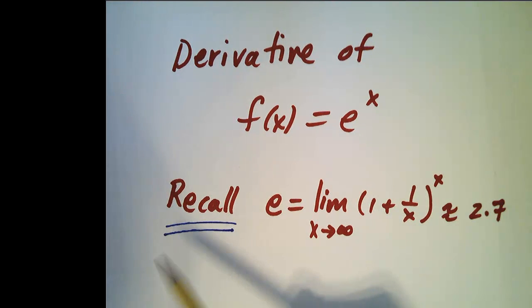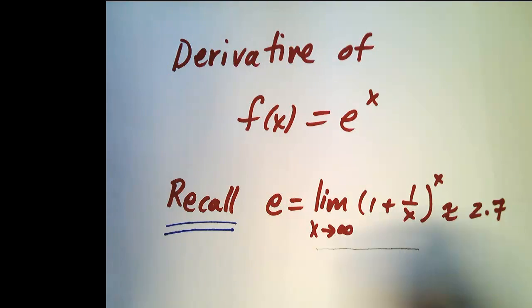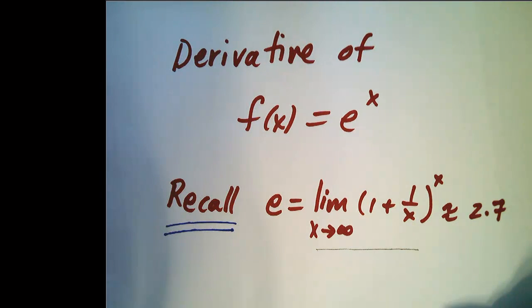Now recall that e is the number that is defined by this limit right here. The limit as x goes to infinity, 1 plus 1 over x to the x. What that limit goes to, we have called e, and it's numerically about 2.7.